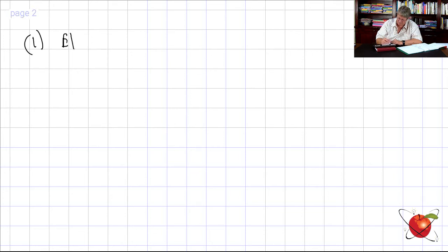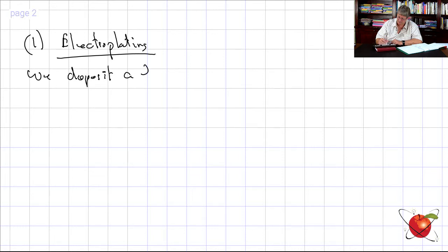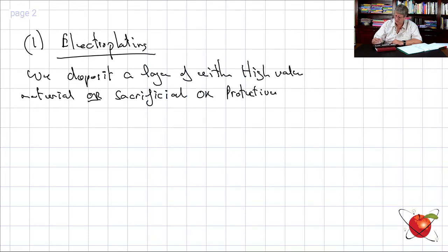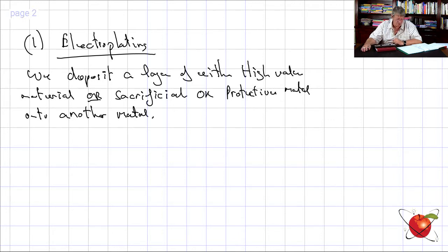Electroplating: we deposit a layer of either high-value material or sacrificial/protective metal onto another metal. We have gold and silver plating, chrome plating, nickel plating, zinc plating. That is the process — taking a lump of material and plating it.